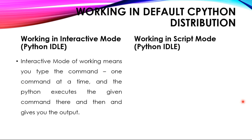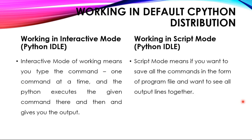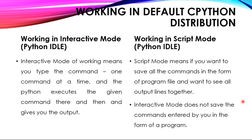Second is working with Script mode. Script mode means if you want to save all the commands in the form of a program file and want to see all the output line by line together, then you can use Script mode. In Interactive mode you cannot save any commands, but in Script mode you can save all commands. If you want more than one output at a time, you have to use Script mode and print all commands together to get the output together. Interactive mode does not save the commands entered by you in the form of a program.